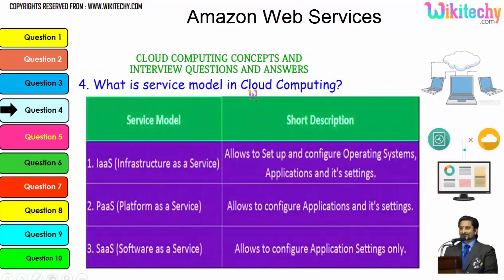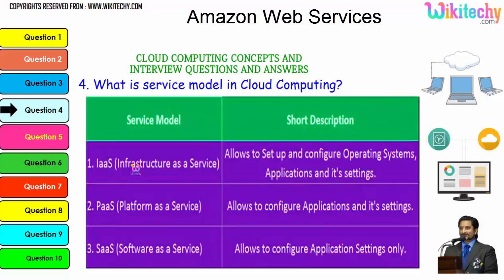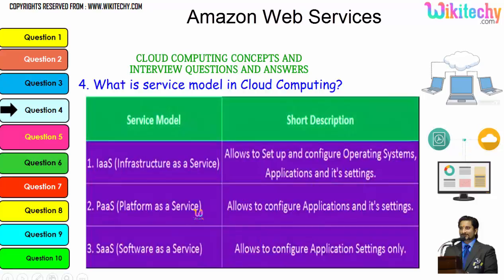What is a service model in cloud computing? There are three major service models. Infrastructure as a Service allows you to set up and configure the operating system, applications, and settings — you are given a server and can install whatever you want. Platform as a Service gives you a specified operating system and you can install any applications and settings. Software as a Service gives you software and you can configure application settings.